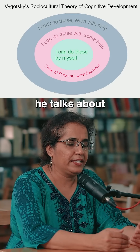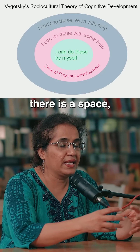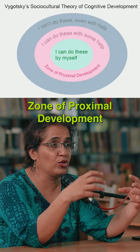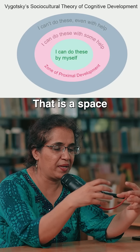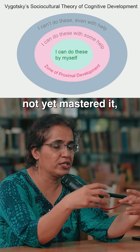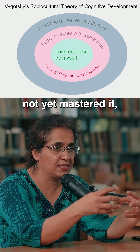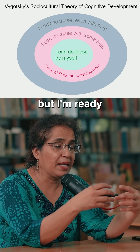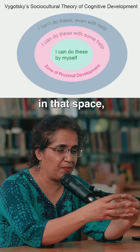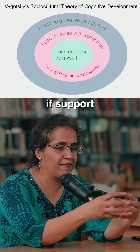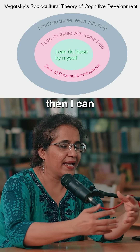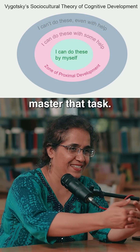Just like that, for children also, he talks about a space — what he calls the Zone of Proximal Development. That is a space where I have not yet mastered something, but I am ready to master it. So when in that space, if support is given to me, then I can master that task.